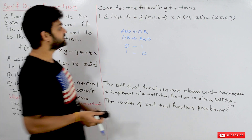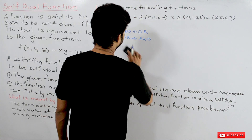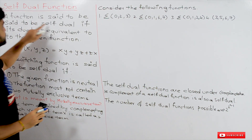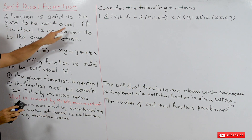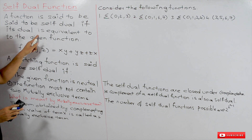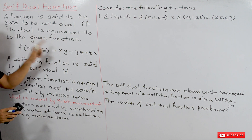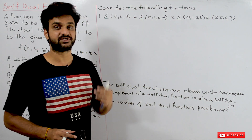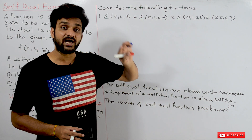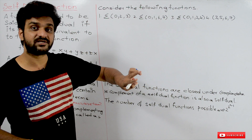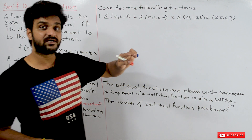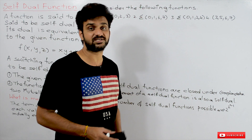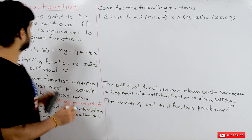Now, what is meant by a self-dual function? A function is said to be self-dual if its dual is equivalent to the given function. If you try to find the dual of that function and the dual is again giving the original function, it is what we call a self-dual function.